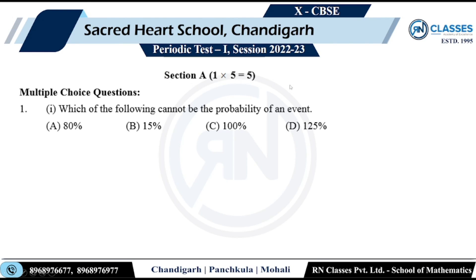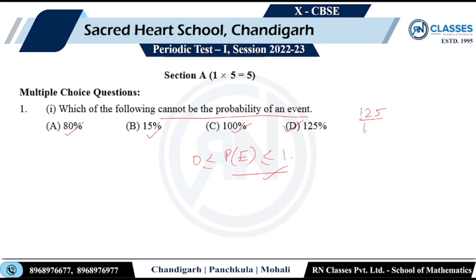Moving on to the very first question: which of the following cannot be the probability of an event? The probability of an event will always lie between 0 and 1. So 80% is 8/10, which lies between 0 and 1. 15% is 15/100, between 0 and 1. 100% is exactly equal to 1, which is fine. But 1/25% means 125/100, which is clearly greater than 1. So that cannot be the probability of an event. Option D is correct.